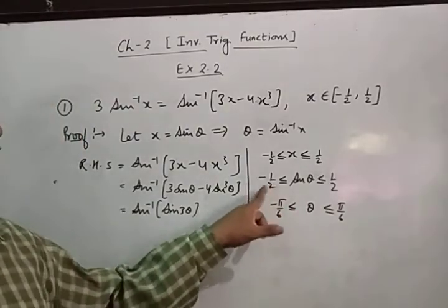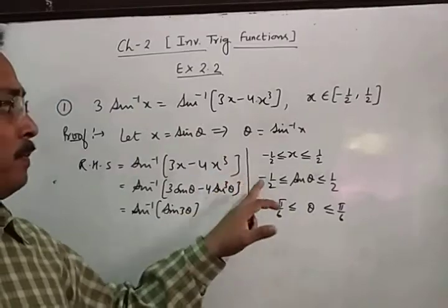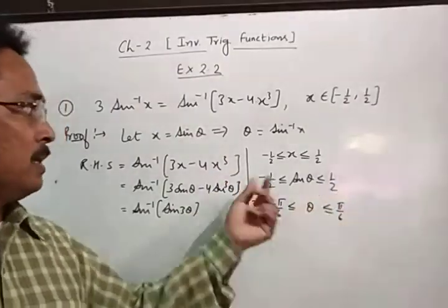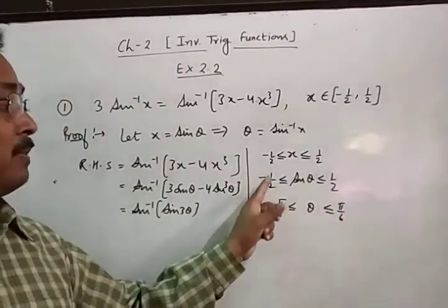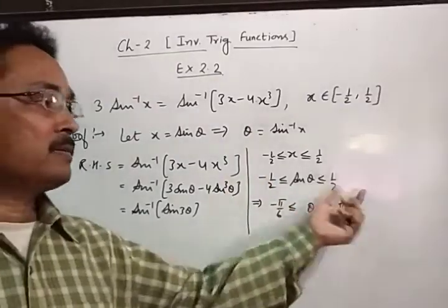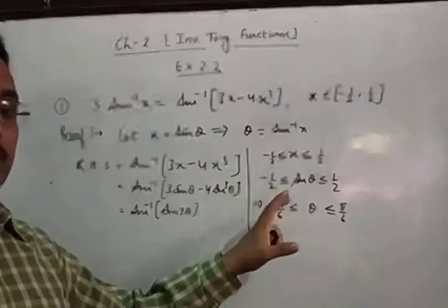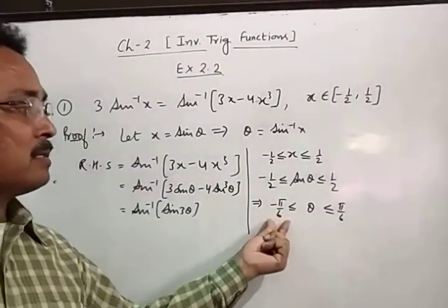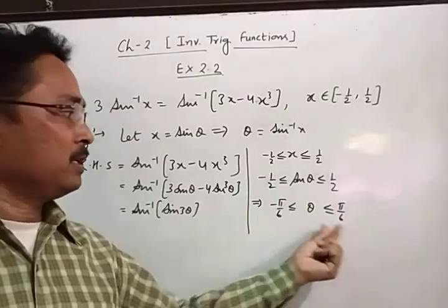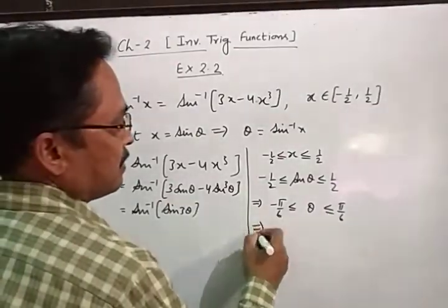In place of 1/2, we can write sin(π/6), and −1/2 as sin(−π/6). Taking sin⁻¹, we get that θ lies between −π/6 and +π/6. Multiplying by 3, we proceed to the next step.